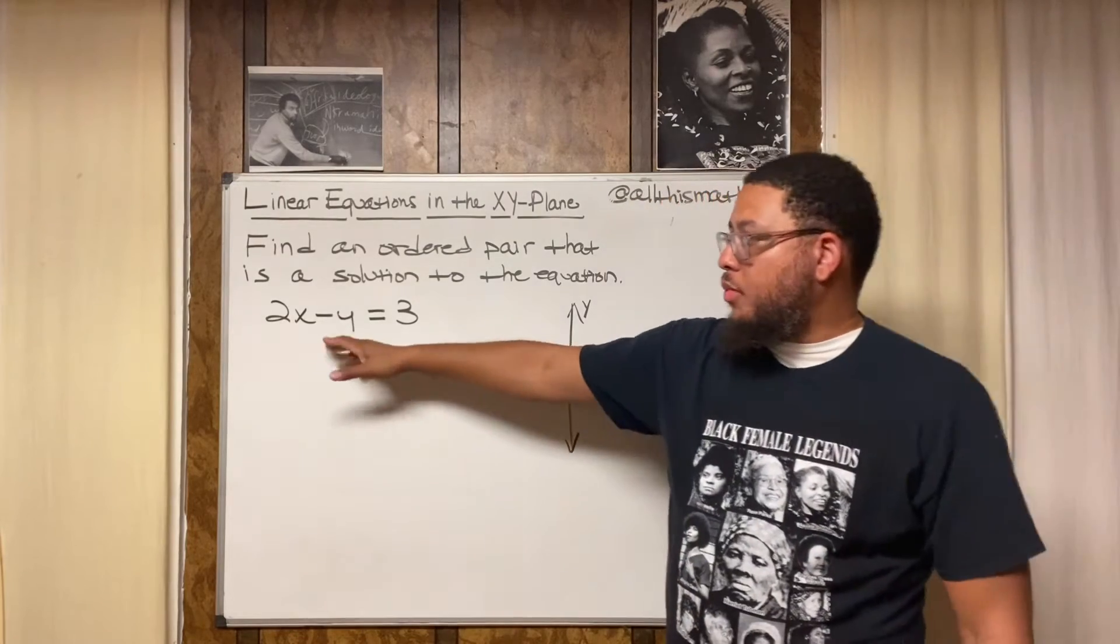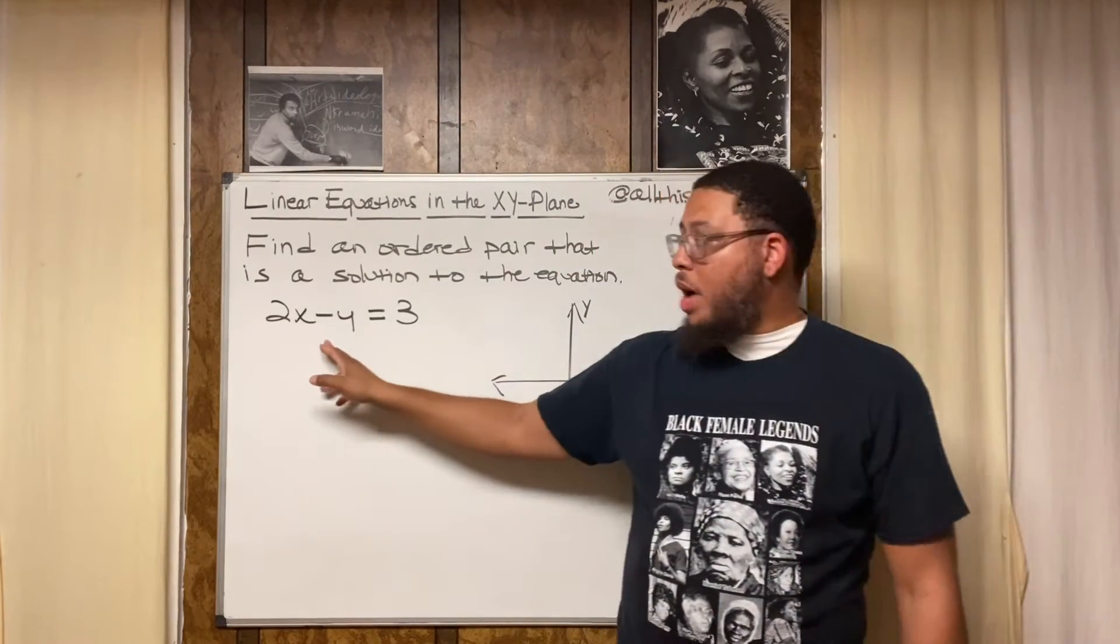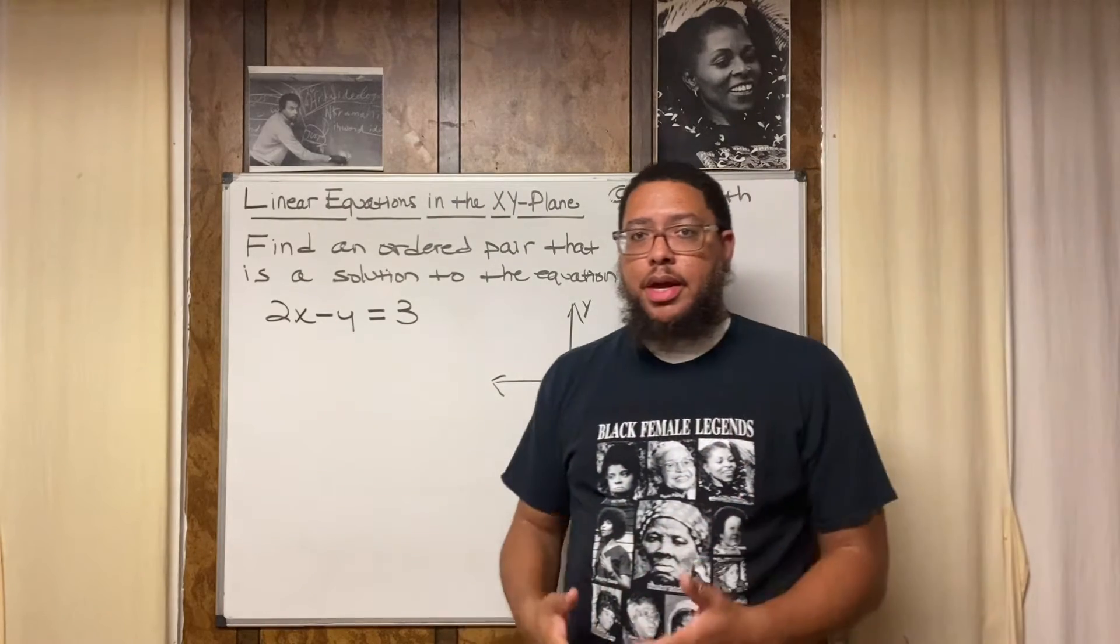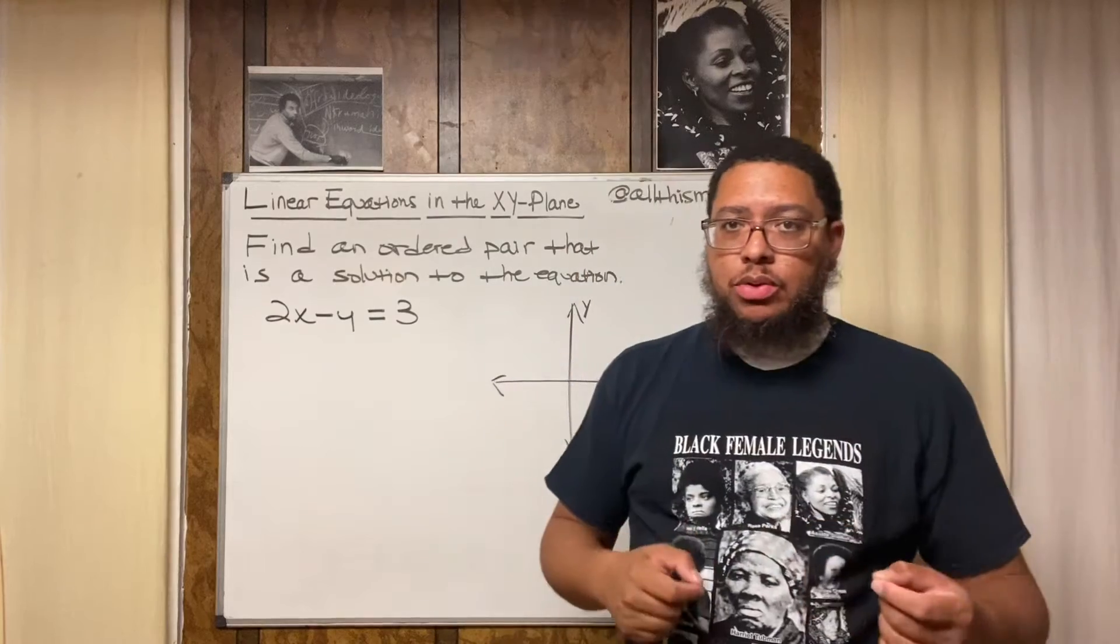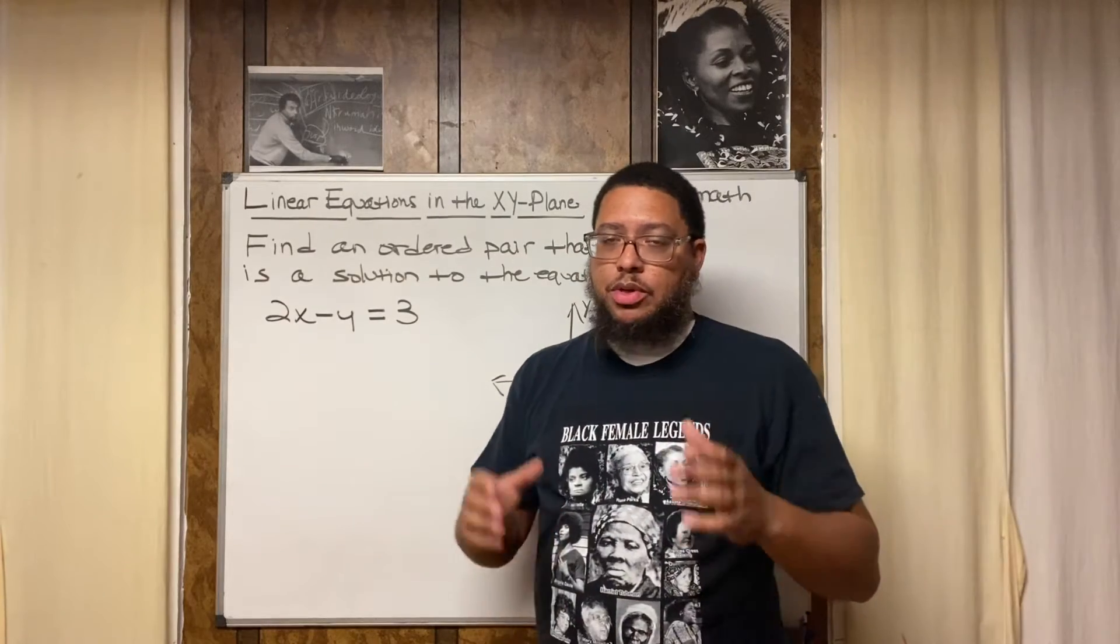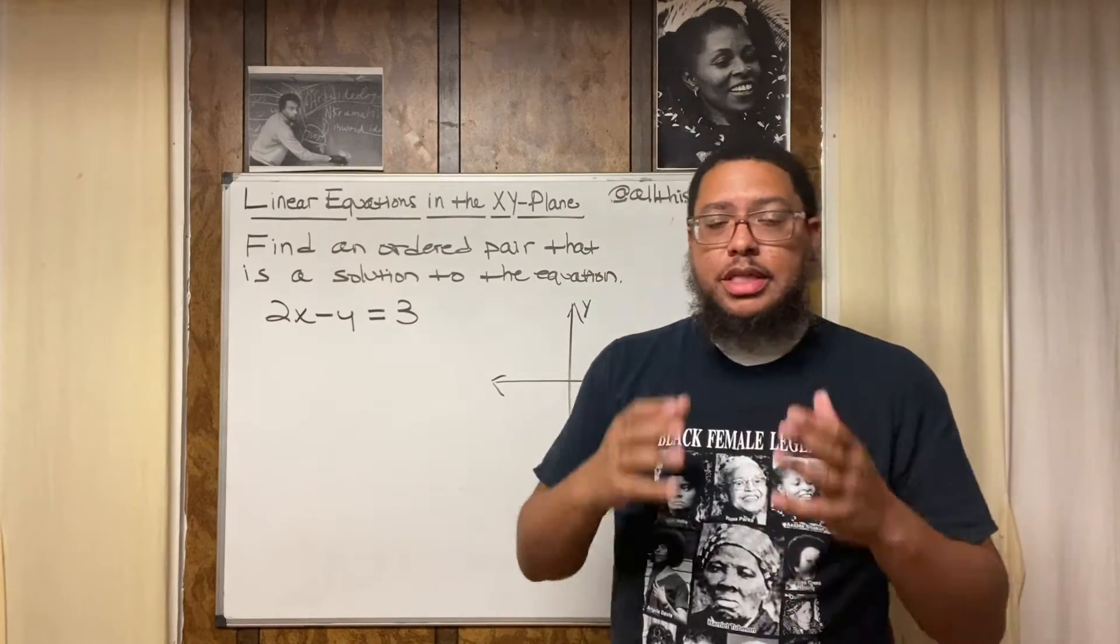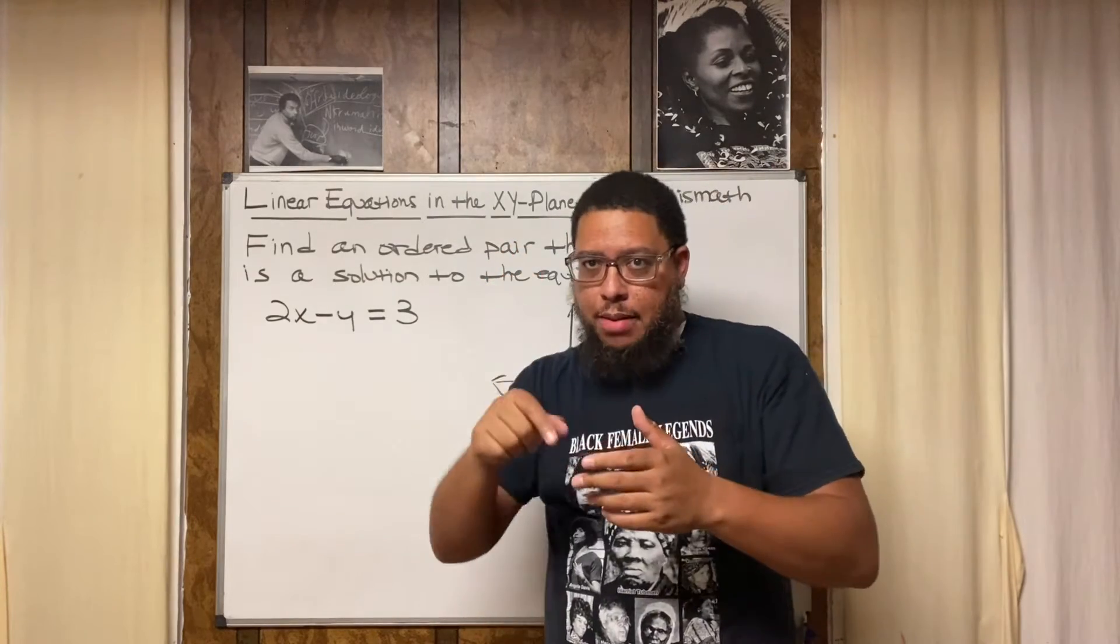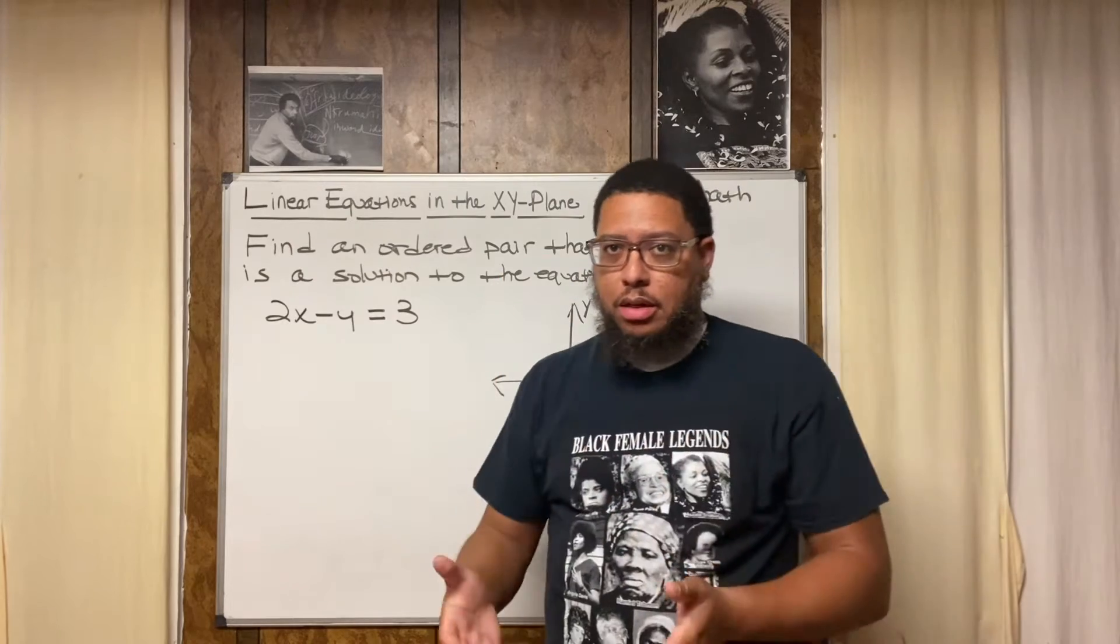And this time we got a different equation: 2x minus y is equal to 3. So 2x minus y is equal to 3. We want to find the ordered pair, meaning an x and a y value. When you see the word ordered, just think alphabetical order because the x value goes first inside the parentheses, then a comma, then the y value comes second.